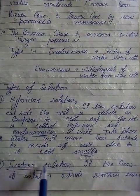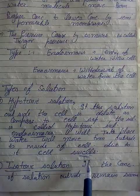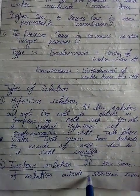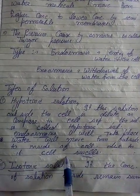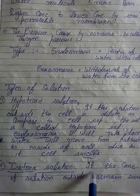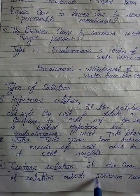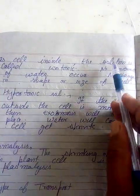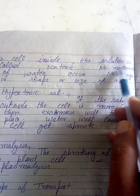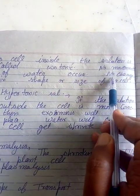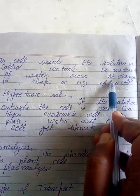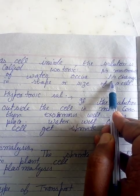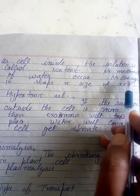Second solution aata hai isotonic solution. Isotonic solution mein kya hota hai — concentration same hogi outside as well as inside. The concentration of the solution remains the same, there is no movement of water in this type of solution.